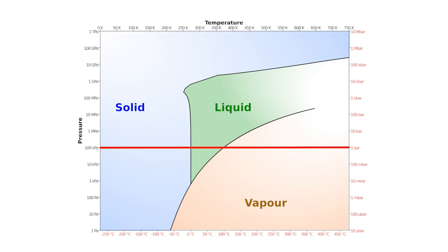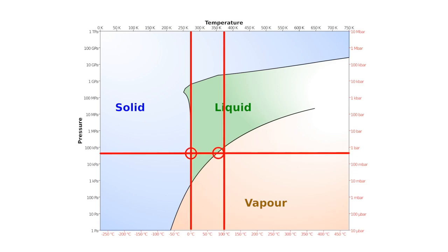This line indicates standard air pressure at sea level, one bar. This line indicates zero degrees Celsius and this line indicates a hundred degrees Celsius. At the intersections of these points, ice freezes at the left or water starts to boil at the right.